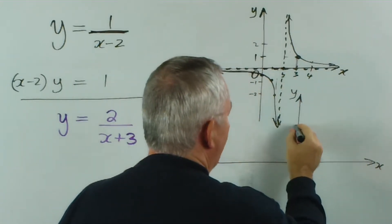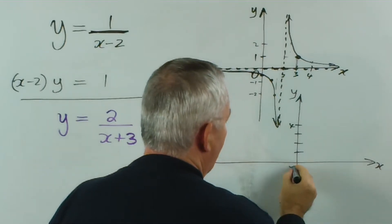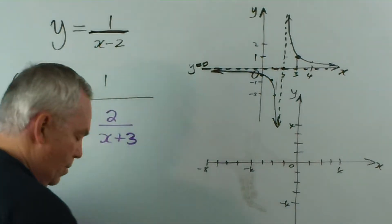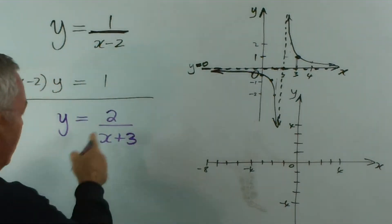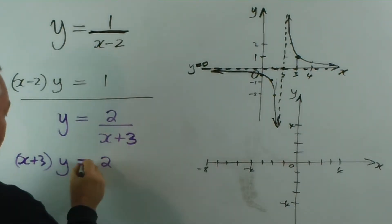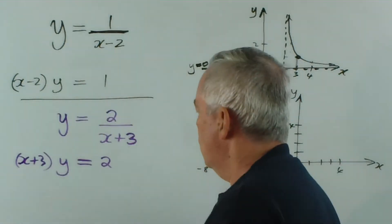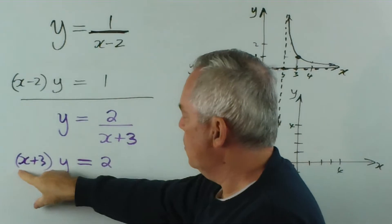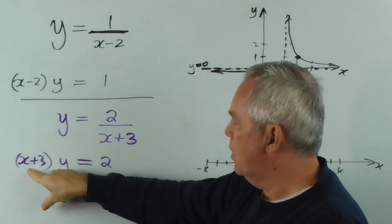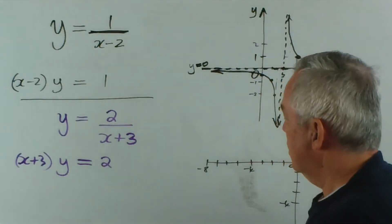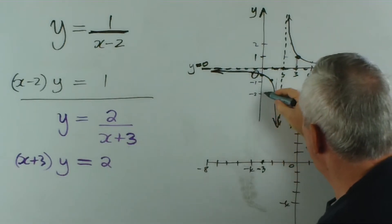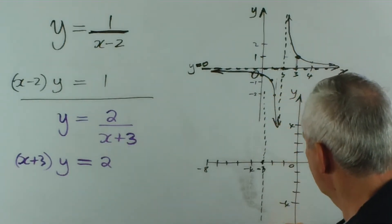I draw the y-axis and x-axis, marking off units. Now, I can rearrange this and multiply both sides by x plus 3. We notice we have an asymptote this time when x is negative 3, because negative 3 plus 3 gives us zero in the denominator, and zero times something can't possibly equal 2. So there's no possible way that x equals negative 3 can give us any sensible values on the curve. There's our asymptote. Similarly, y equals zero would be an asymptote.